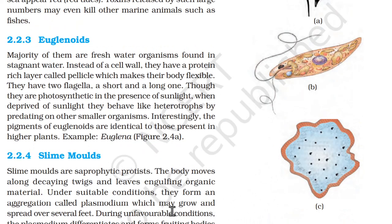2.2.3 Euglenoids. The majority of them are freshwater organisms found in stagnant water. Instead of a cell wall, they have a protein-rich layer called the pellicle, which makes their body flexible. They have two flagella — a short and a long one. Though they are photosynthetic in the presence of sunlight, when deprived of sunlight they behave like heterotrophs by preying on other smaller organisms. Interestingly, the pigments of euglenoids are identical to those found in higher plants, as in Euglena.